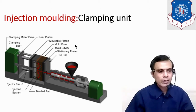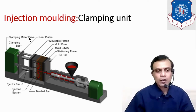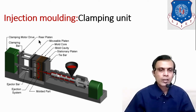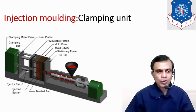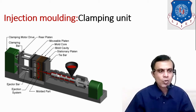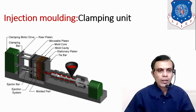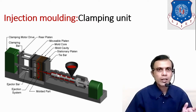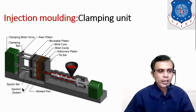The second unit is the Clamping Unit. It consists of clamping bars and a clamping motor drive, which is useful to drive the rear plate to get fixed with the movable plate. The movable plate is driven in this direction with the clamping motor drive mechanism. It consists of the clamping bar, clamping motor drive, rear plate, and ejector pins — the ejection system. After completion of the process, it is necessary to eject the moulded part, and for that requirement, this ejector bar is used.